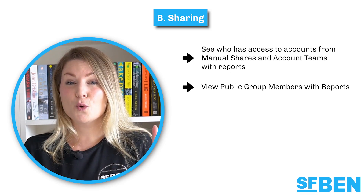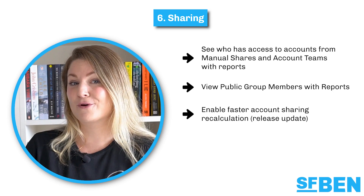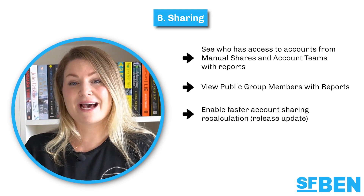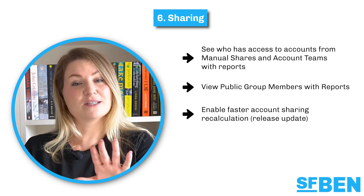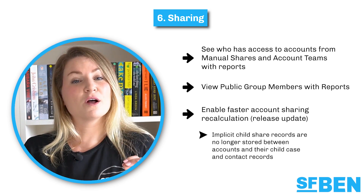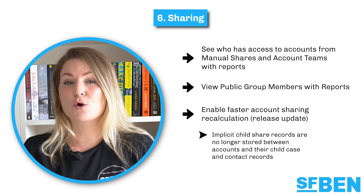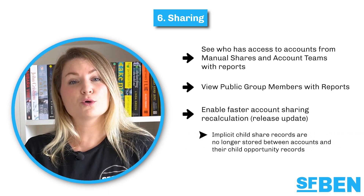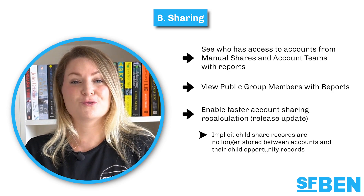There are two release updates designed to enable faster account sharing recalculation. To improve performance, Salesforce is changing how account sharing recalculation works behind the scenes, so there's nothing needed on your part. Implicit child share records are no longer stored between accounts and their child case and contact records, and implicit child share records are no longer stored between accounts and their child opportunity records.